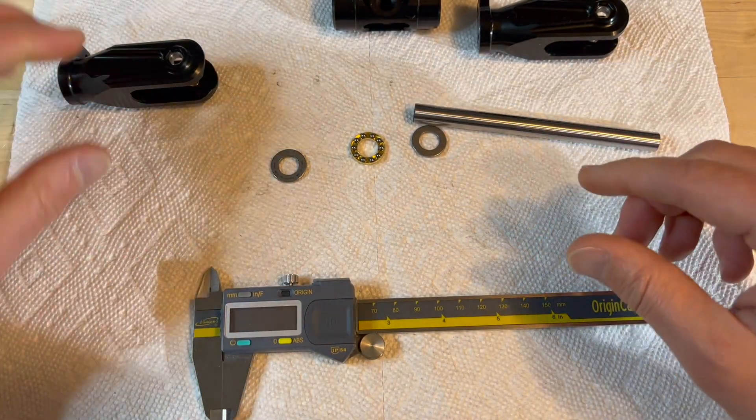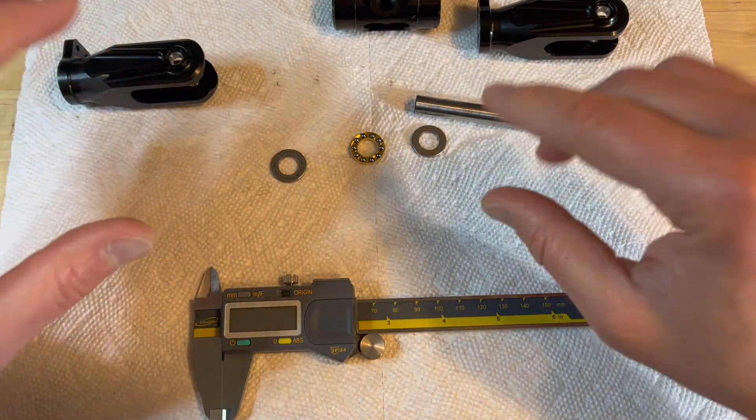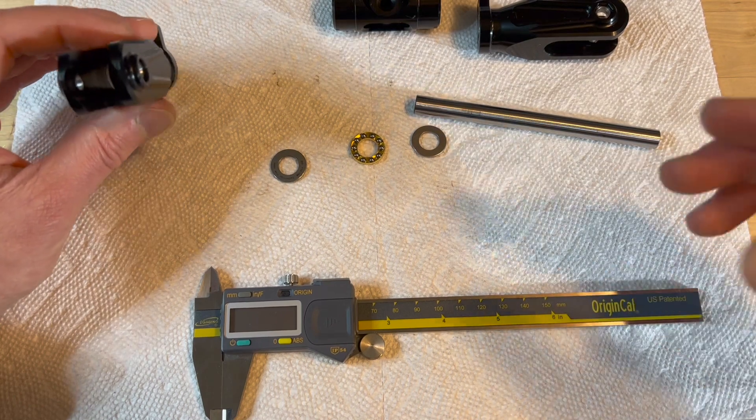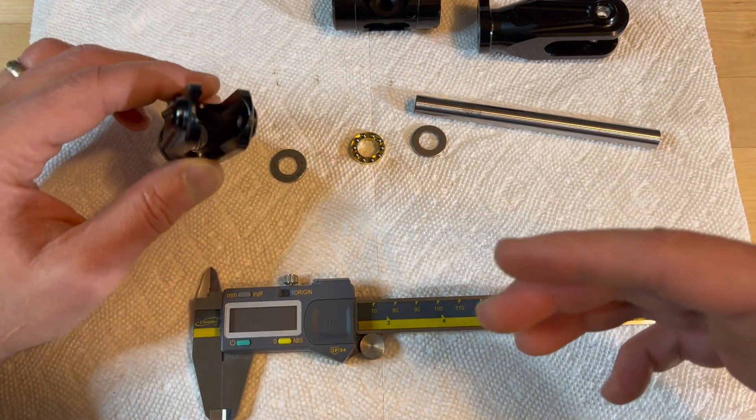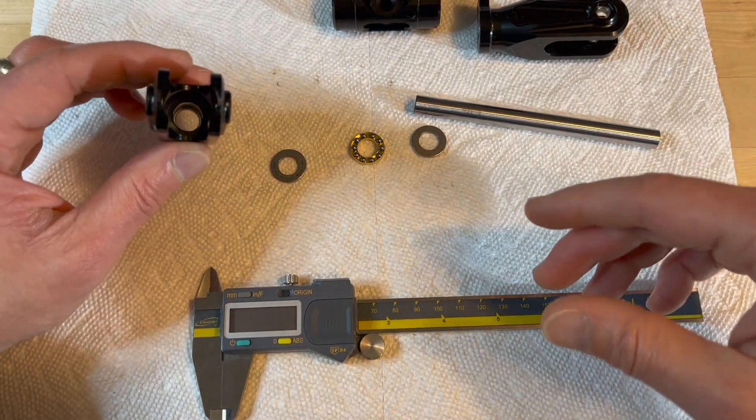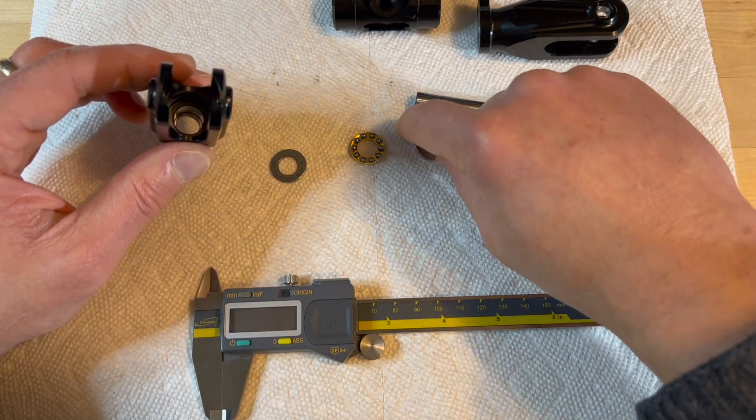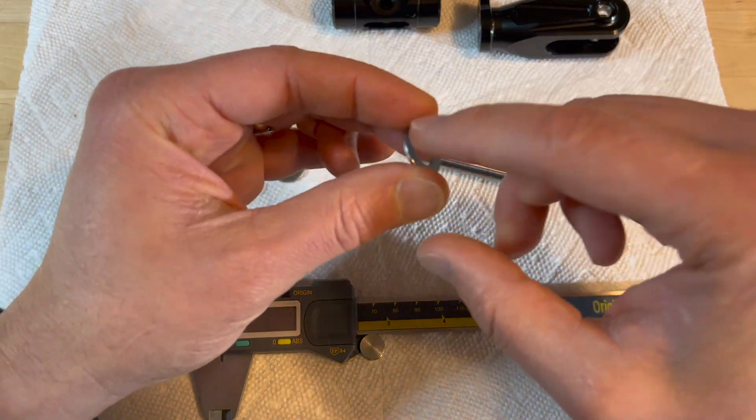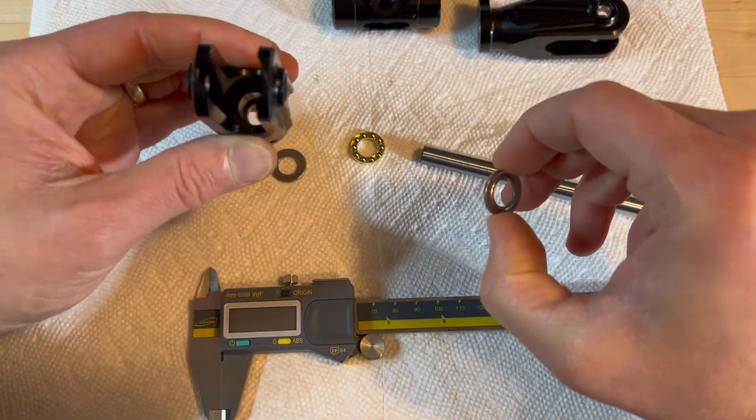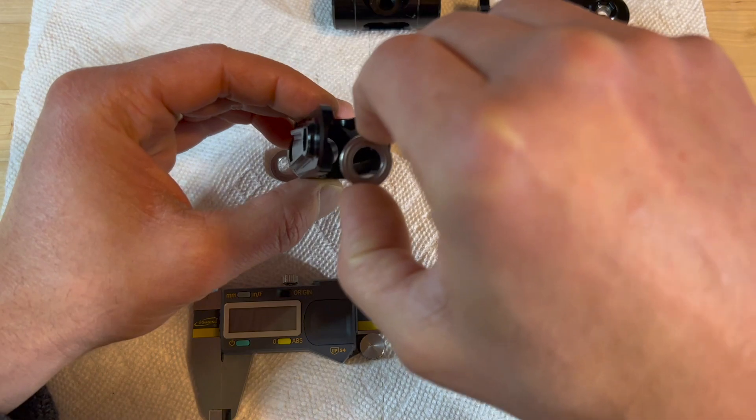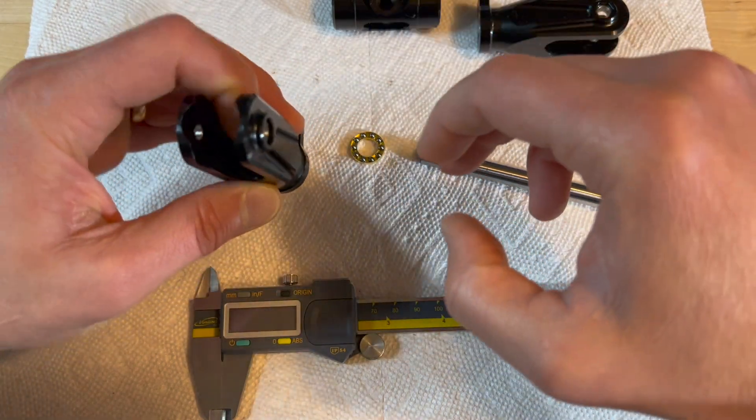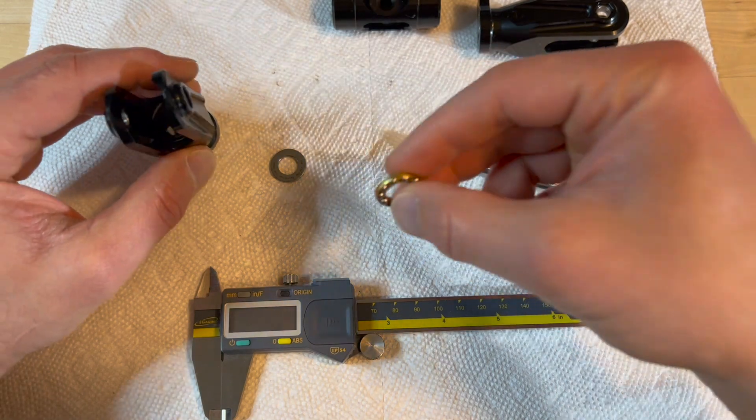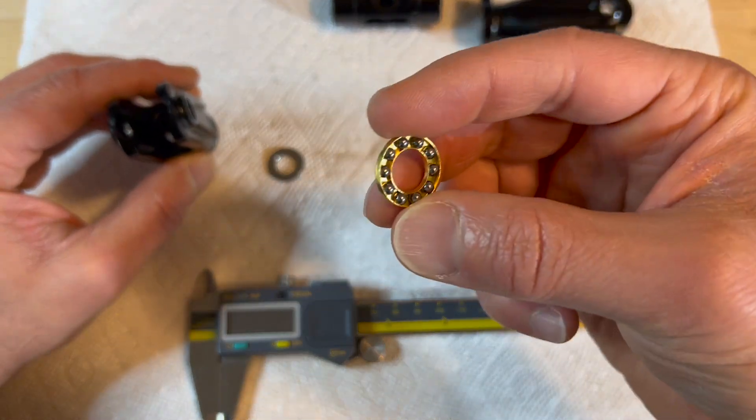Now, just for completion, always, any helicopter that uses thrust bearings, you always insert the larger - what we established is the large inner diameter race - into the blade grip first. And then you insert the actual bearings.